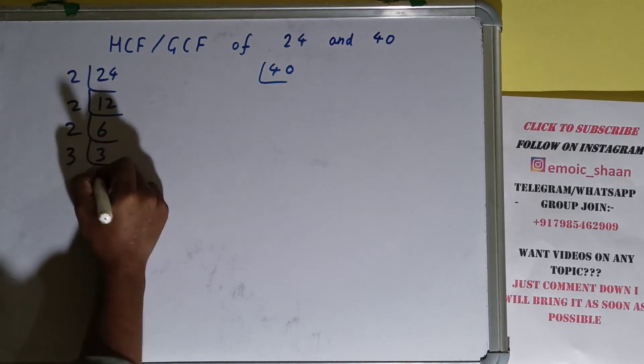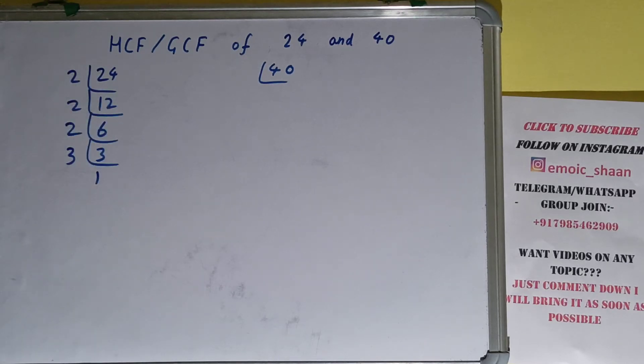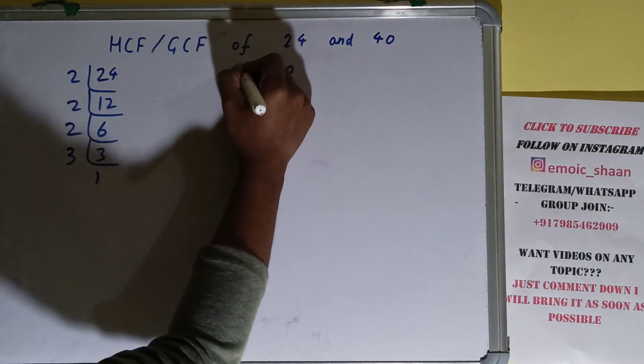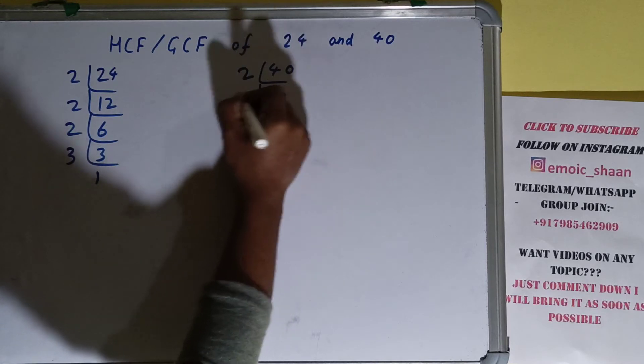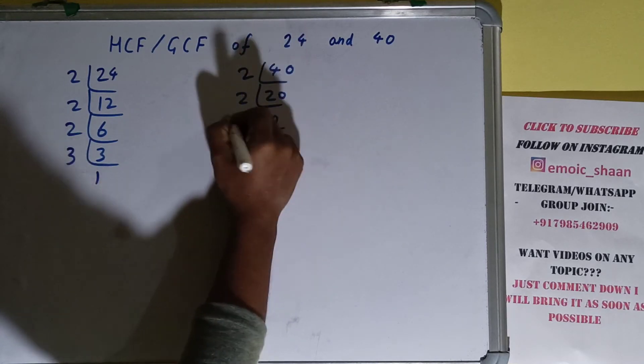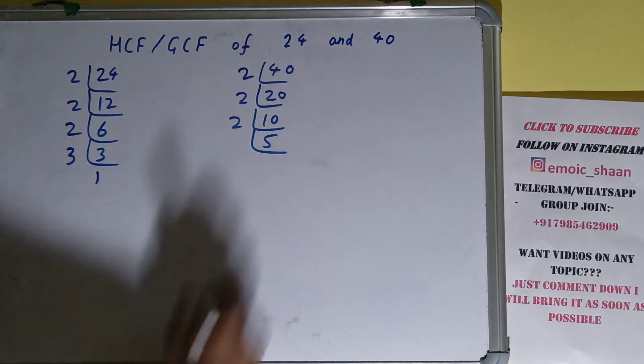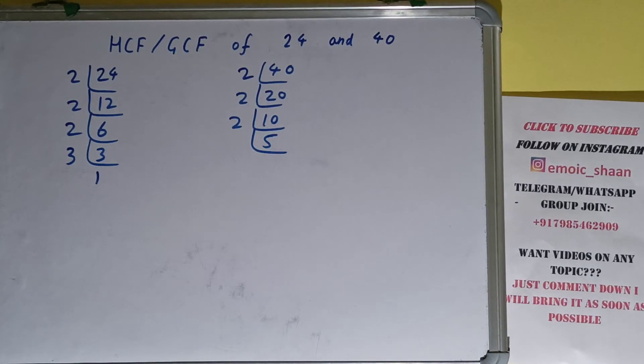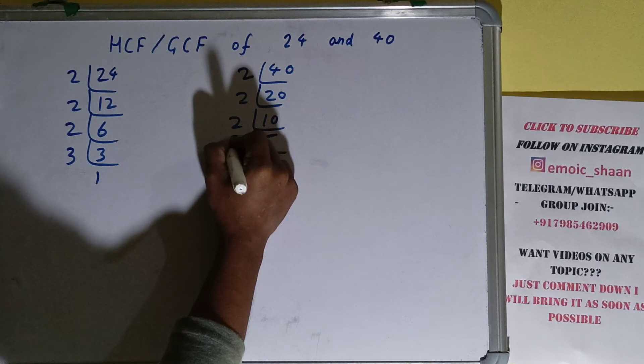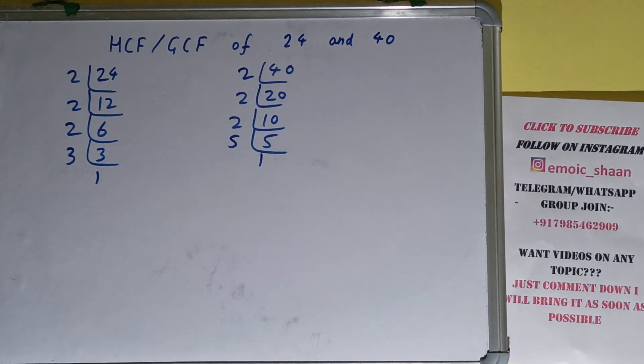We are done with 24. Now we need to do the same with the number 40. Is 40 divisible by 2? Yes, we'll have 20. Is 20 divisible by 2? Yes, we'll have 10. Is 10 divisible by 2? Yes, we'll have 5. Is 5 divisible by 2? No, because 5 is a prime number, so it is only divisible by itself and we'll have 1.